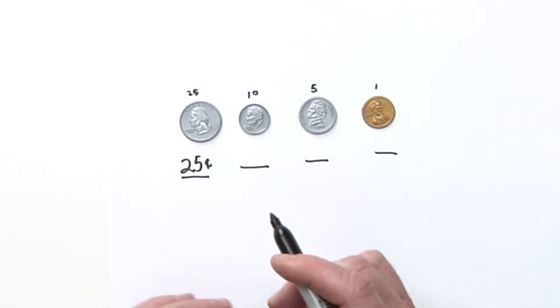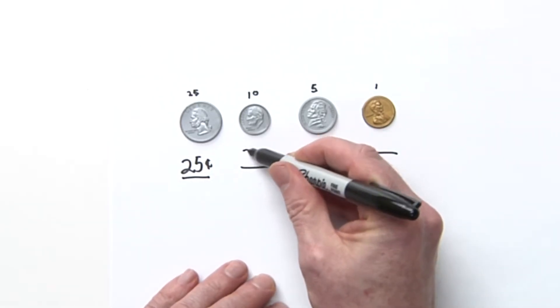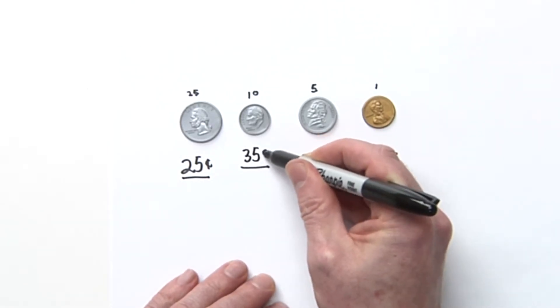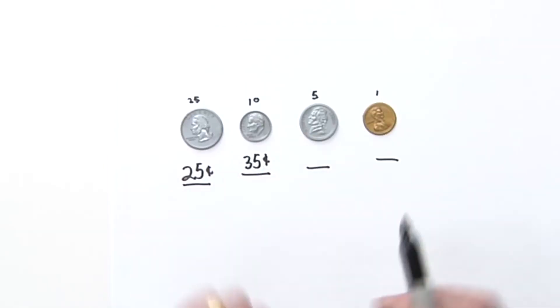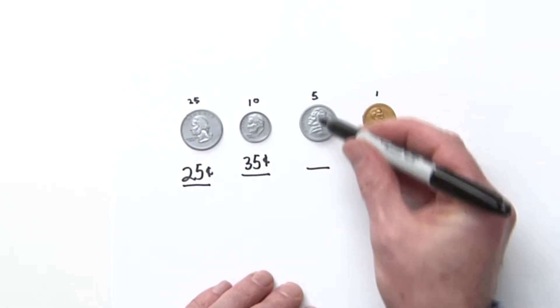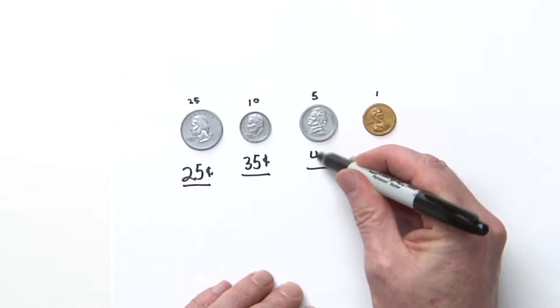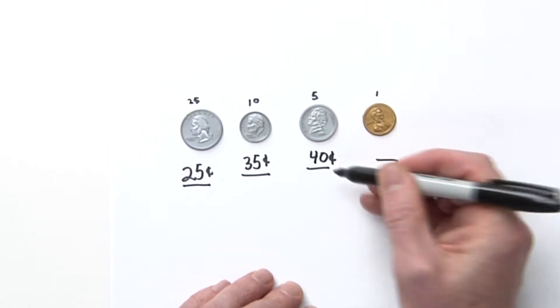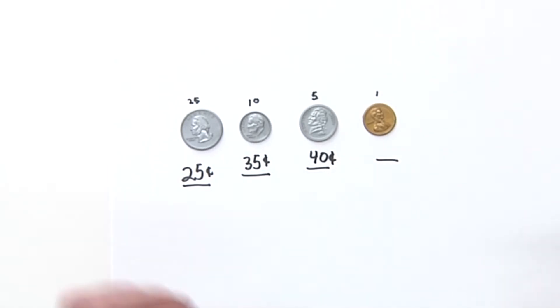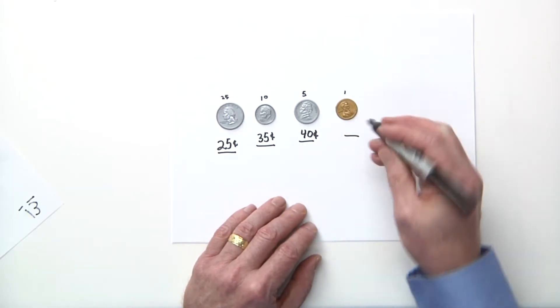So 25 plus 10 is 35 cents. Now we take 35 cents plus a nickel, so 35 plus 5 is 40 cents. Now we add the penny, so 40 cents plus a penny would be 41 cents.